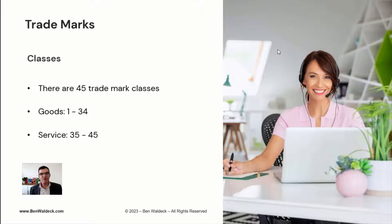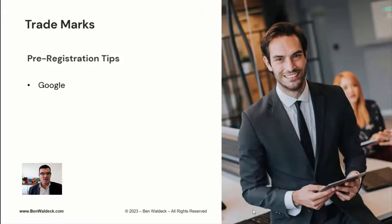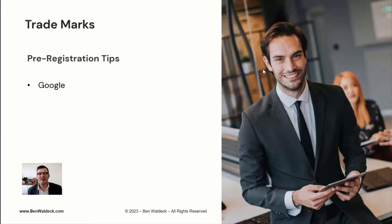Pre-registration tips: a good place to start is Google, because you need to look for common law trademarks that might not be registered on the IP Australia database. Common law trademarks are businesses that carry on using a mark without officially registering it. If you skip this step and register, these people can oppose your trademark application, so it's good to get on the front foot and find out who may object and what could cause conflict in the future.